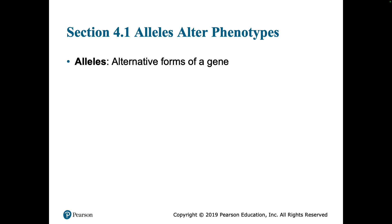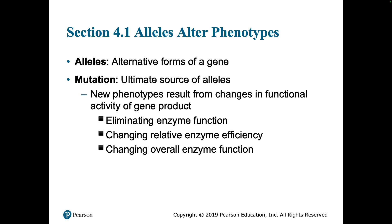As a review of what we talked about on Wednesday and Thursday: alleles are alternative forms of a gene, and having different alleles can lead to different phenotypes — it can cause the organism to look different. But where do we get these different alleles? These different alleles arise through mutation — changes in the DNA.